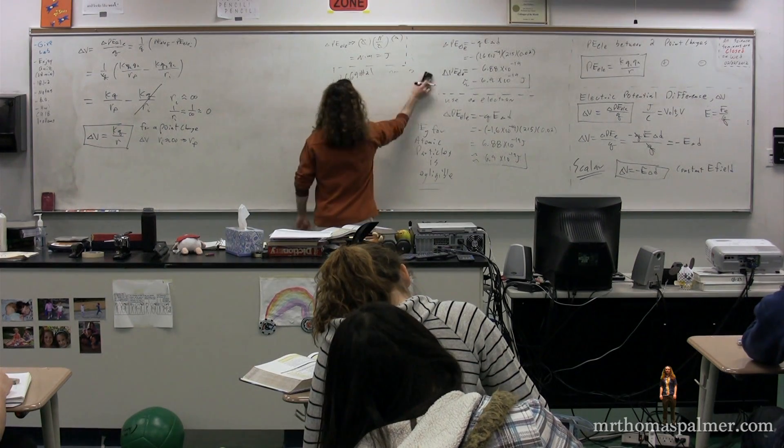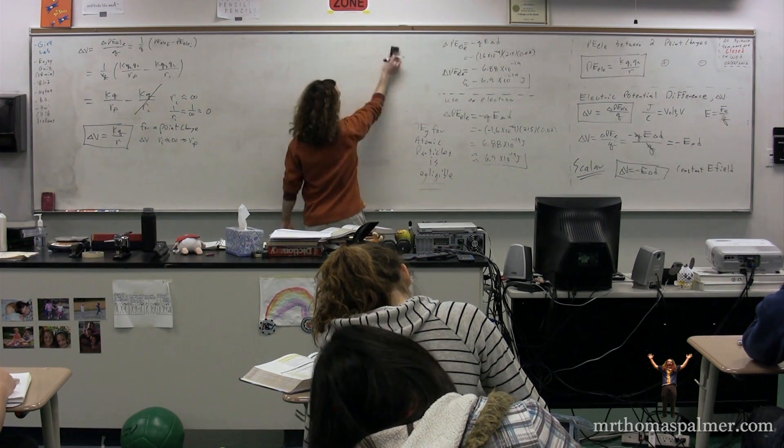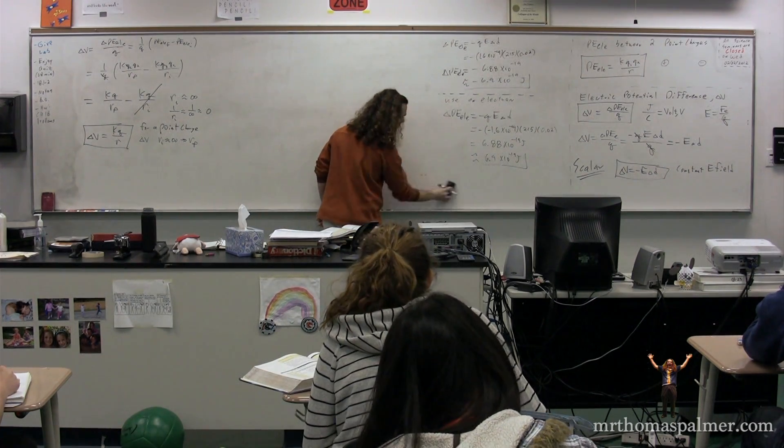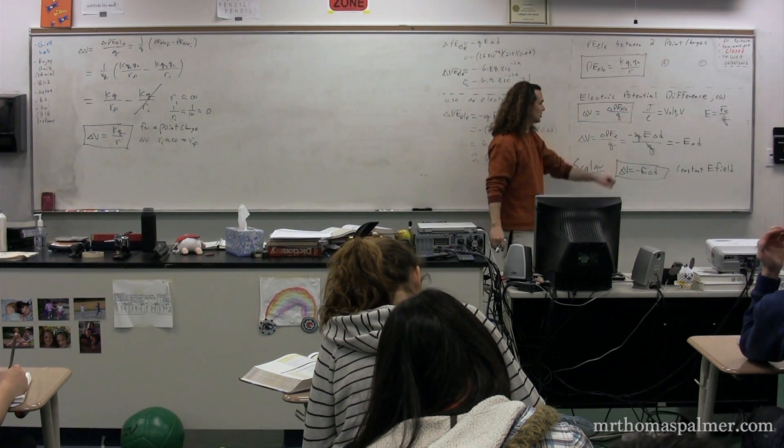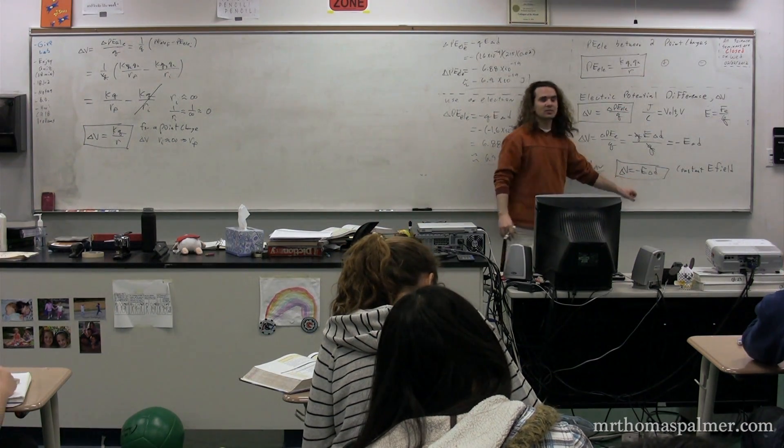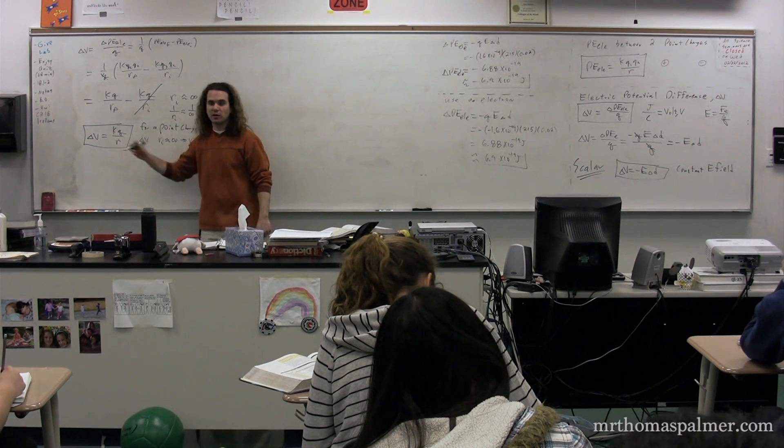So now we have three different equations for electric potential difference. We have the general equation for electric potential difference, which is equal to the change in electric potential energy per unit charge. And then we have one for a constant electric field, and one for a point charge.